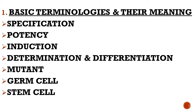Starting with basic terminologies in developmental biology — for example, specification, conditional specification, autonomous specification. Most Section B questions come from these. You must know what is specification, what is potency, what is induction, what is determination and differentiation, and how differentiation follows determination. Also understand the differences between germ cell and stem cell — try to list at least seven to eight differences between them.